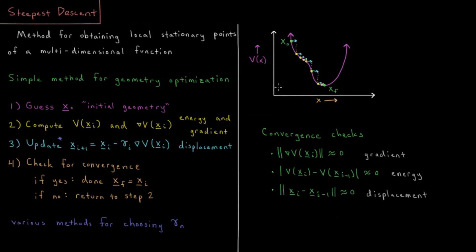In principle, if we imagine we have some potential energy V, it is going to be in 3N dimensions — 3 coordinates per atom, N atoms, 3N total coordinates. At each point we compute the gradient, i.e. the derivative of the energy, take some displacement of our system, compute the new energy, the new gradient, displace again, and keep going until our energy has reached a minimum and our gradient has gone to zero, as has the amount by which we are displacing the coordinates.